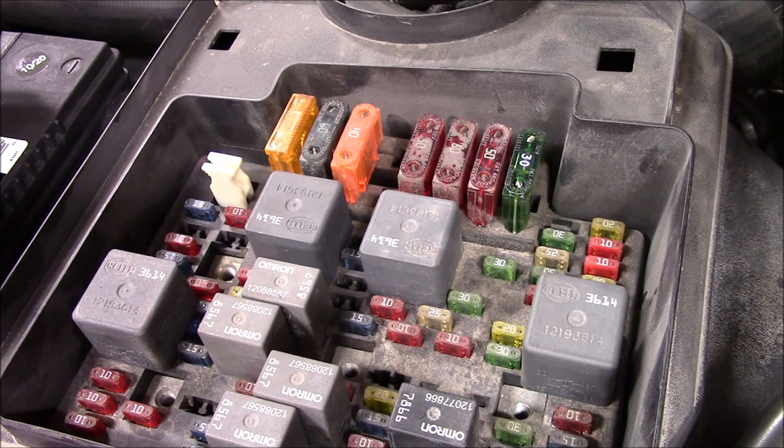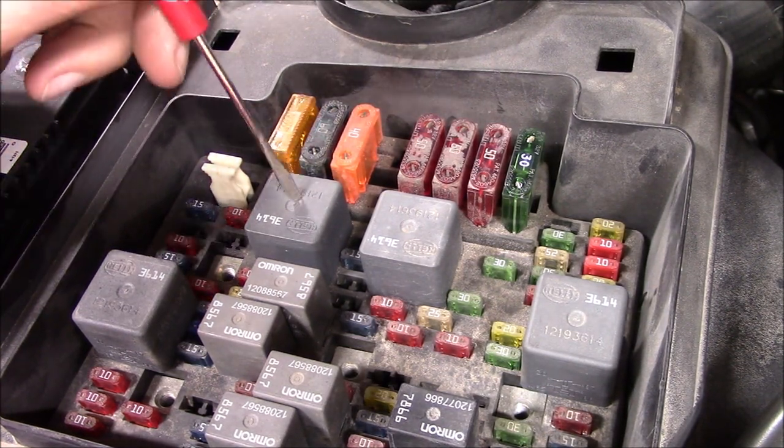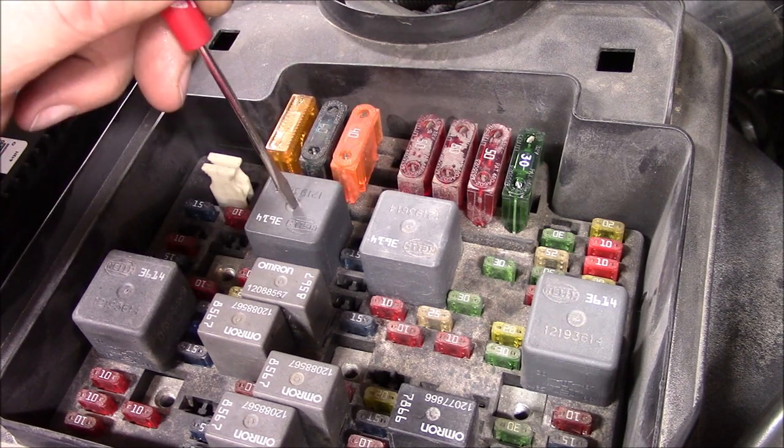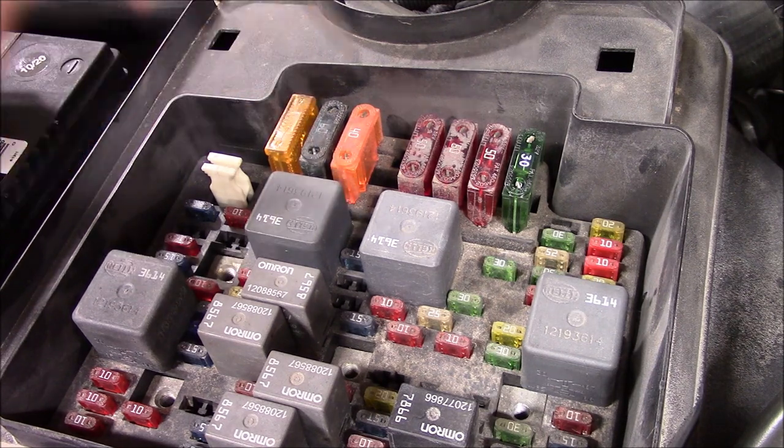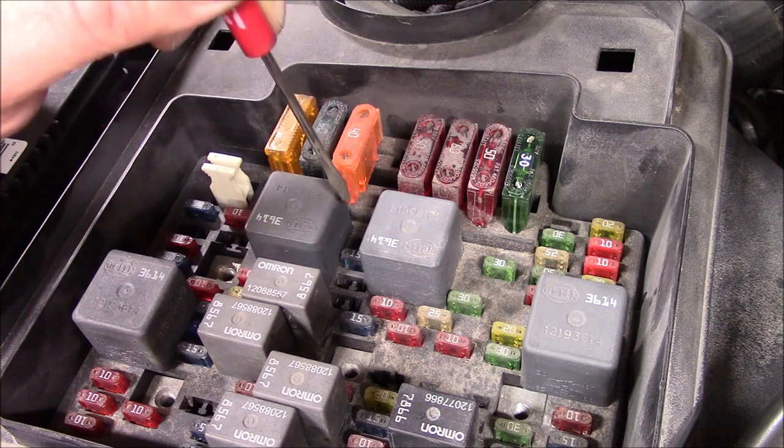All right, we're here at the electrical center at the driver's side fender just behind the battery. So you've got your two relays here. This is your ignition driver relay, I believe this is relay one. Right at the top here, there's a 25 amp fuse. It's right between these two relays right there. That's the one you want to pull that disables the FICM.